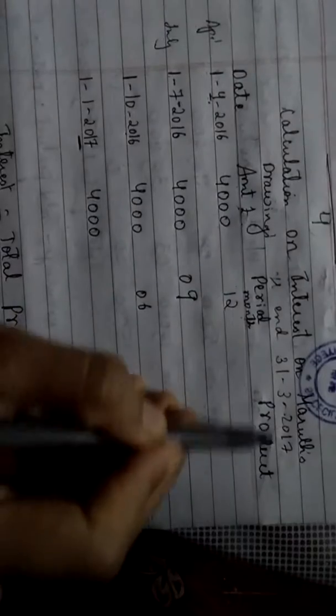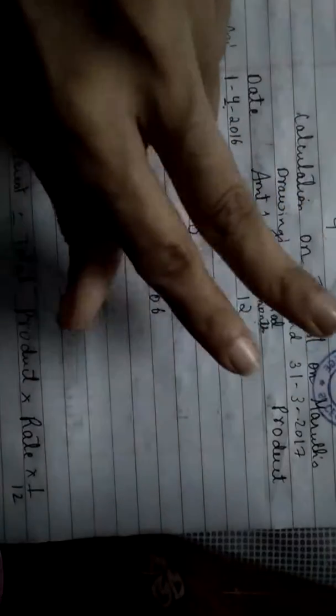Now 1/1/2017 till 31/3/2017. How many months? 1 means January. January, February, March. That's it. Yes, 3.